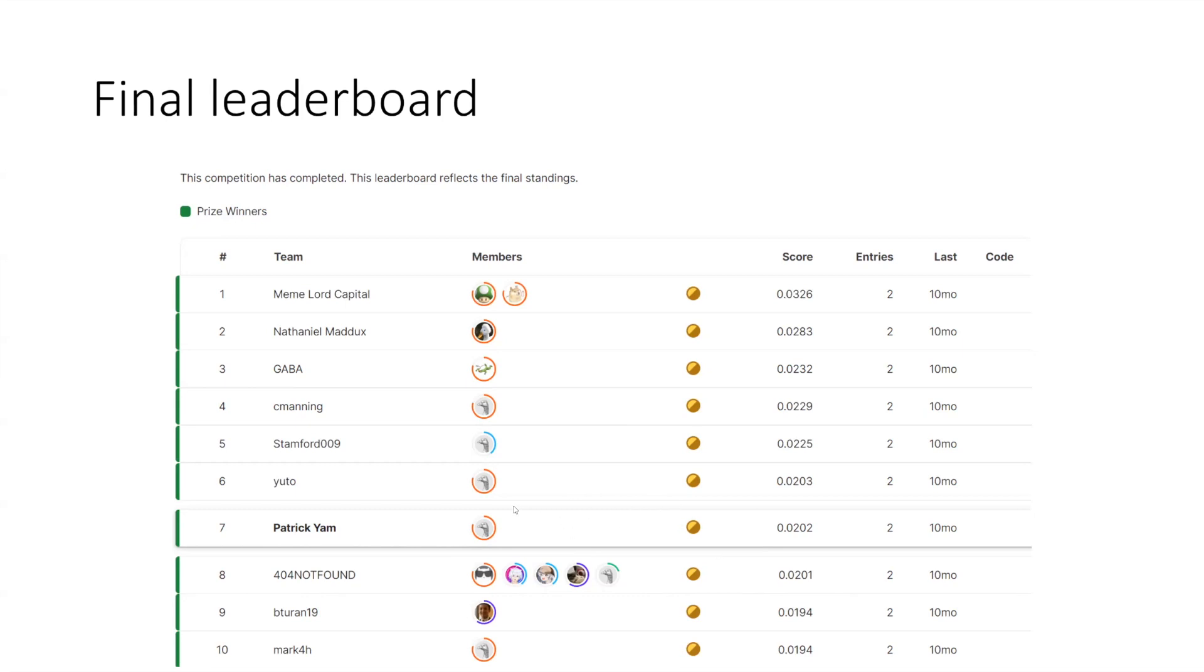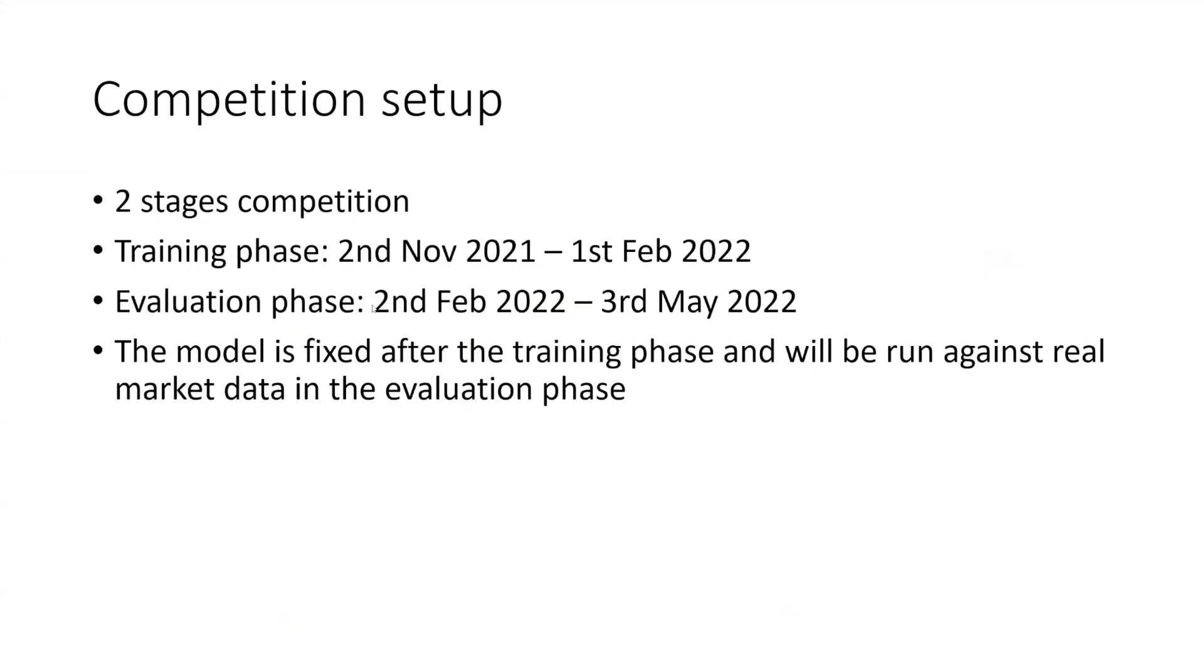No domain knowledge is required for my solution. This competition is a two-stage competition. The first stage is a three-month long training phase and the second stage is a three-month long evaluation phase. We cannot retrain the model after the first stage and the inference code will be fixed and run automatically in the second stage with real market data.